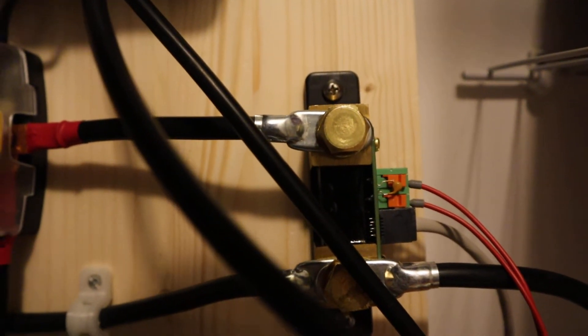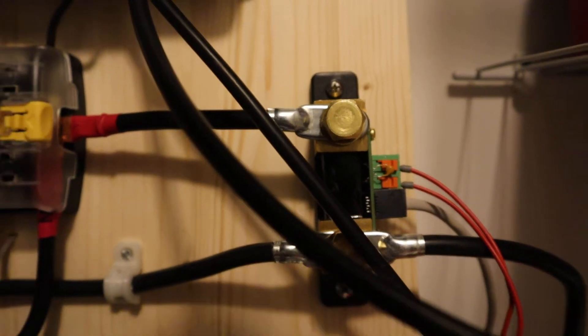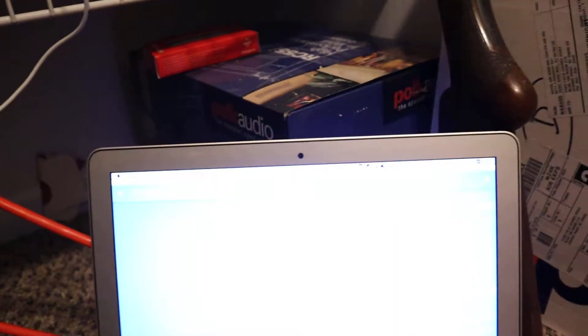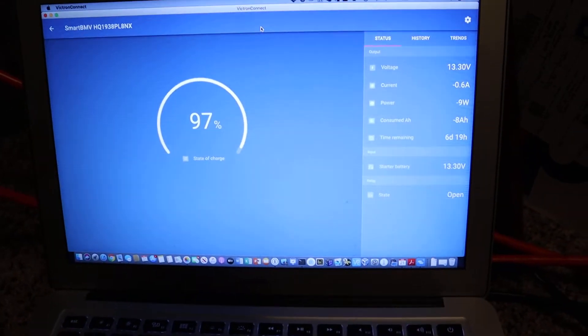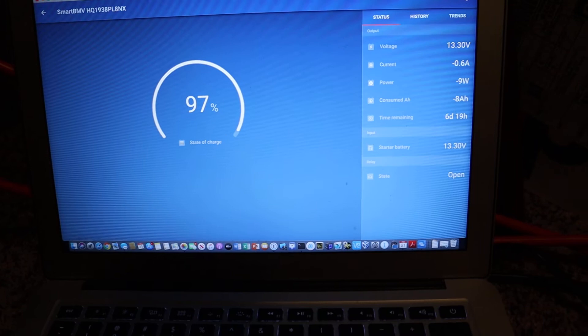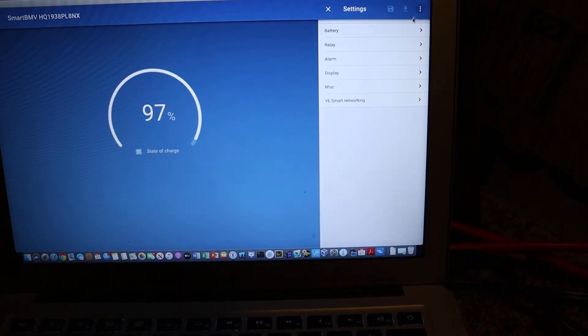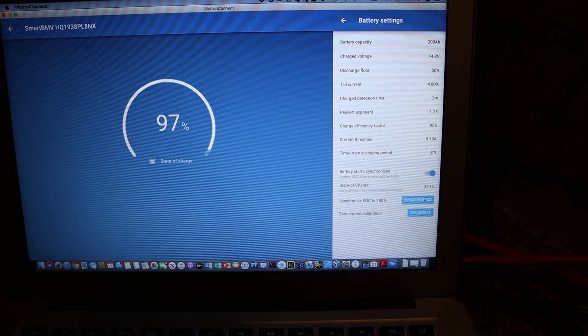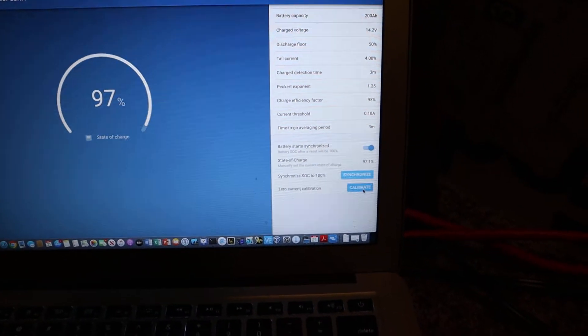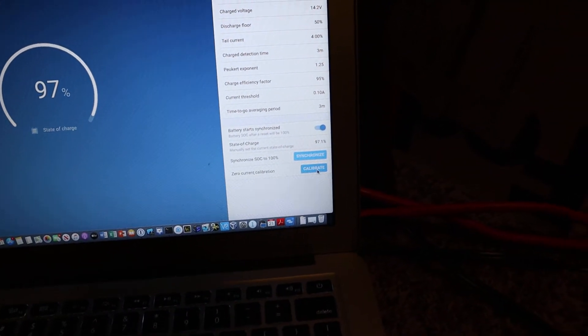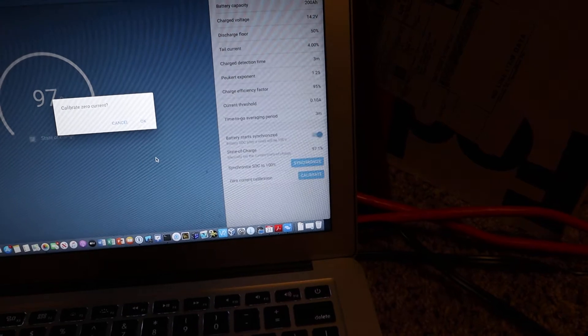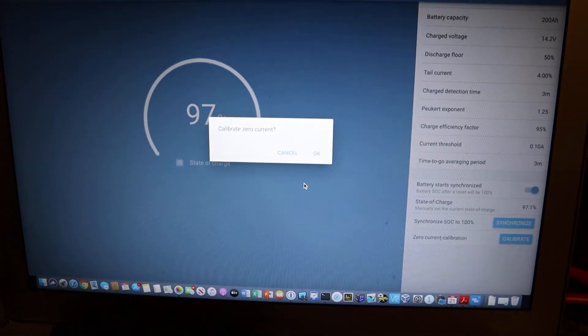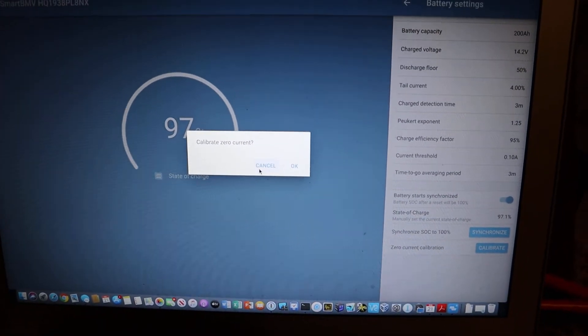Once you lift it, you go into your program whether it's Mac or on your iPhone, and you go to your little settings wheel here, then battery, and then you go down here and hit the calibrate button. Once you hit the calibrate button it'll ask if you want to really calibrate this thing and you would hit okay.